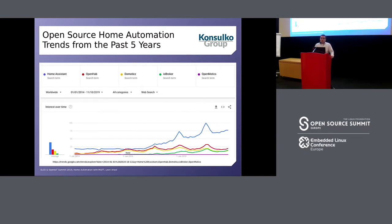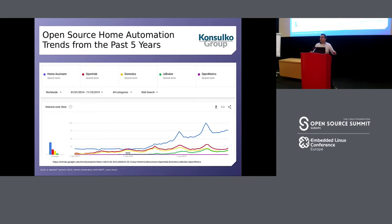Nowadays there are a lot of open source home automation platforms which you can install at your home and use. Like five or ten years ago, this was not the case, and a lot of people started from scratch because there was no appropriate open source platform for home automation on the market at that time. However, today the situation is completely different. There are a lot of home automation platforms that are free and open source software, some with a huge community and a lot of useful features.